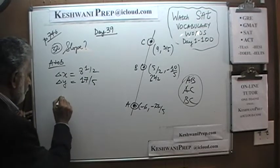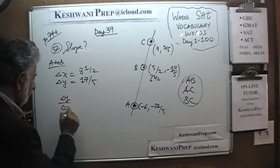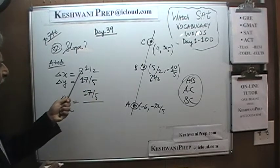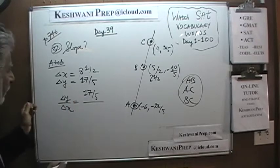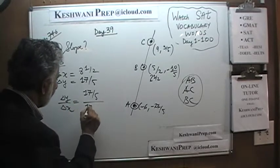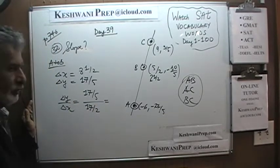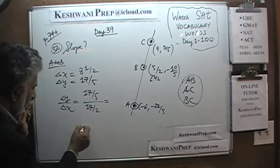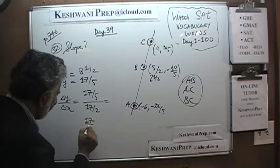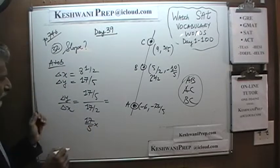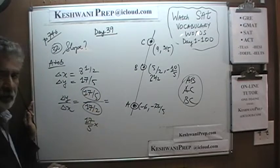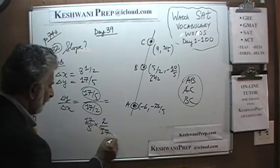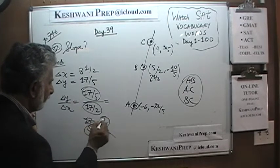Slope is simply change in Y over the change in X. Change in Y is 17 fifths, change in X is 8 and a half, which is 16 plus 1 — 17 halves. So we take 17 fifths times the reciprocal of the bottom part, which is 2 over 17. The 17s are going to cancel out, and the slope is simply 2 fifths.